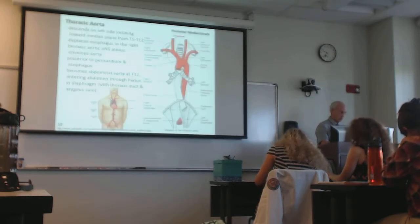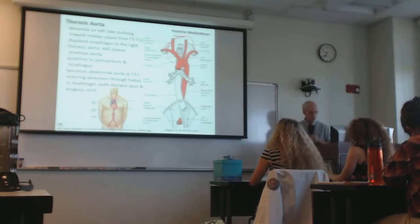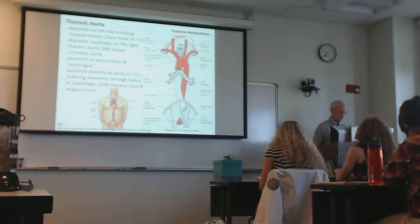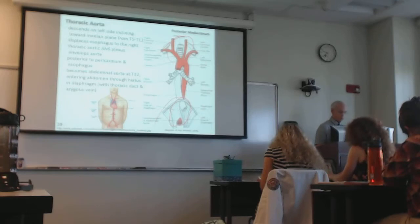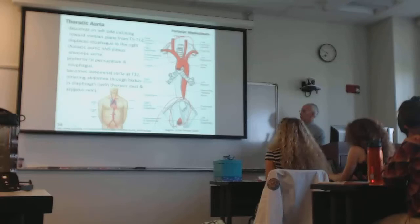The esophagus stays fairly close to the spinal column in its descent through the thoracic cavity. Two hiatuses are visible here; the third opening in the diaphragm — the caval hiatus for the inferior vena cava — is not shown here but was seen in an earlier image. All three will be discussed in the abdominal unit.